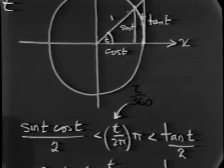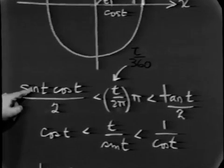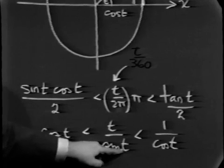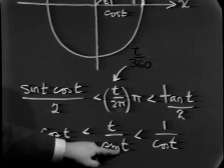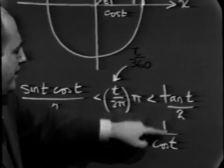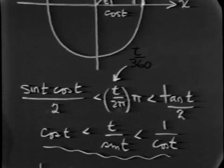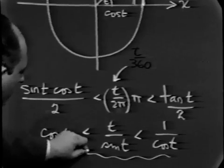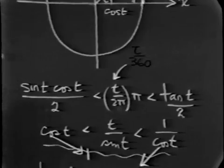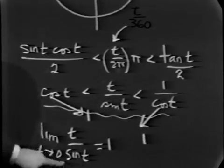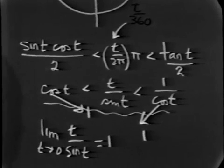Multiplying through by 2 and dividing through by sine t. And by the way, this hinges on the fact that t is positive. Again, in our notes, we treat the case where t is negative to arrive at the same result. Remembering that tan t is sine t over cosine t, we wind up with this result. And now observing that as t approaches 0, this approaches 1. This also approaches 1. And t over sine t is caught between these two. We get that the limit of t over sine t as t approaches 0 is 1.